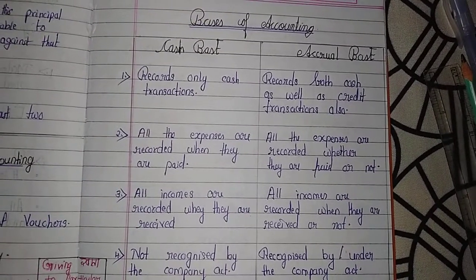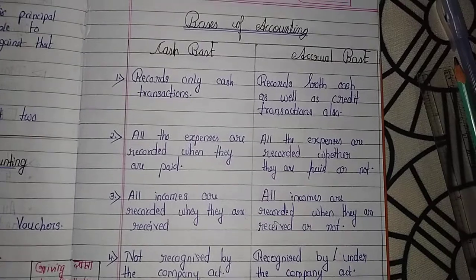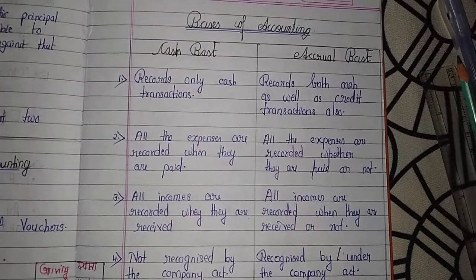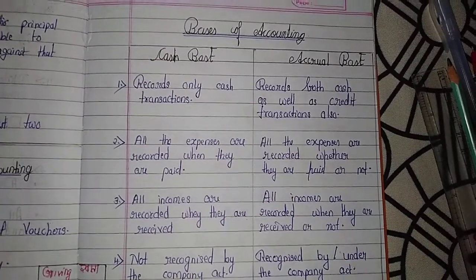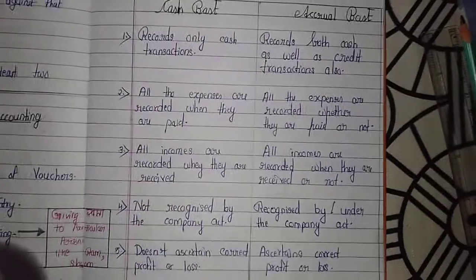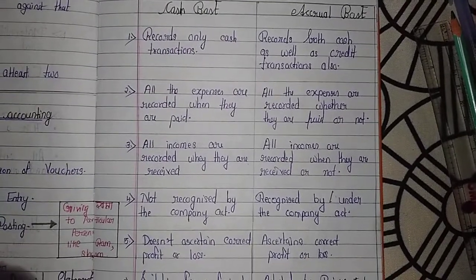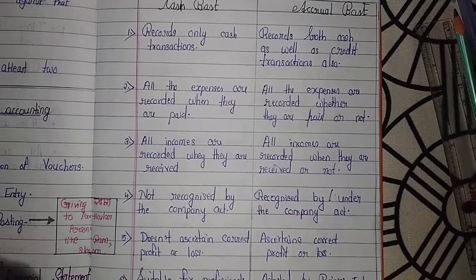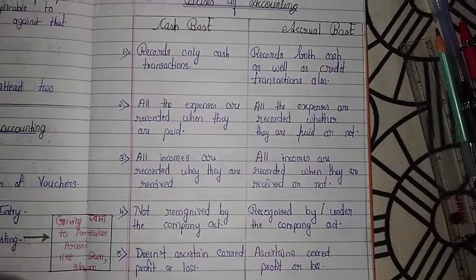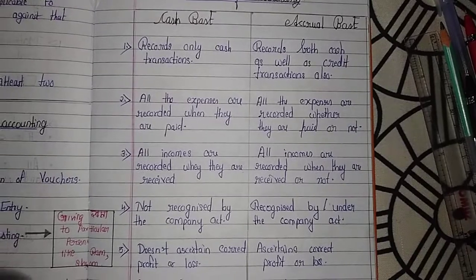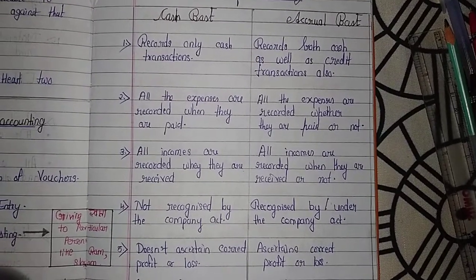Cash base records expenses only when they are paid, whereas in accrual base, all expenses are recorded whether they are paid or not. Third, all incomes are recorded only when they are received in cash base.